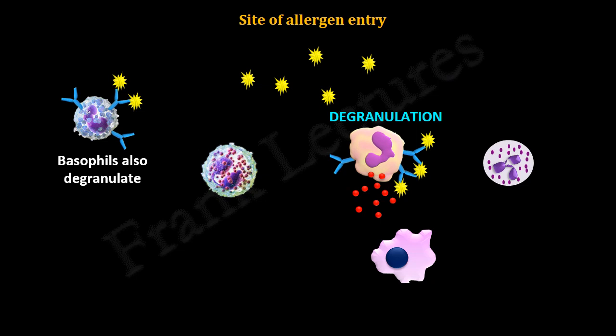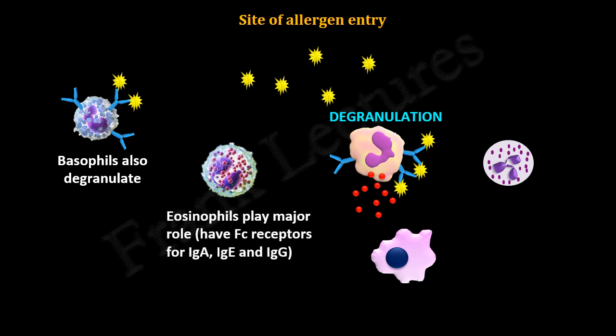In the late-phase reaction, eosinophils play an important role because they have Fc receptors for IgA, IgG, and IgE antibodies. When eosinophils get activated, they release inflammatory mediators such as leukotrienes, platelet-activating factor, interleukin-4, interleukin-10, major basic protein, eosinophil-derived neurotoxin, and eosinophilic cationic protein. They also activate macrophages and neutrophils. All these mediators and activated cells cause more tissue destruction.